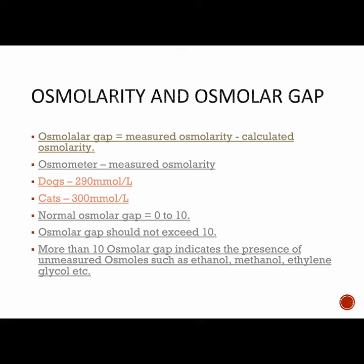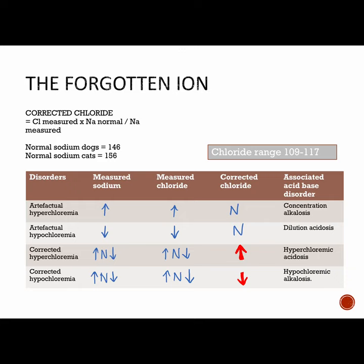Whether or not an acid-base disturbance is present, corrected chloride should always be estimated. The formula is shown on screen, and this table will help you understand the significance of corrected chloride. Corrected chloride helps differentiate artifactual imbalance in chloride from a true chloride imbalance.